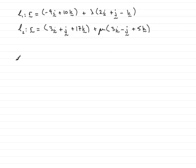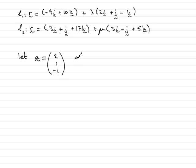So that's what we're going to do. I'm going to let vector A be this direction vector — 2, 1, minus 1 — written as a column vector. And I'm also going to say that B equals this direction vector, in other words 3, minus 1, 5.